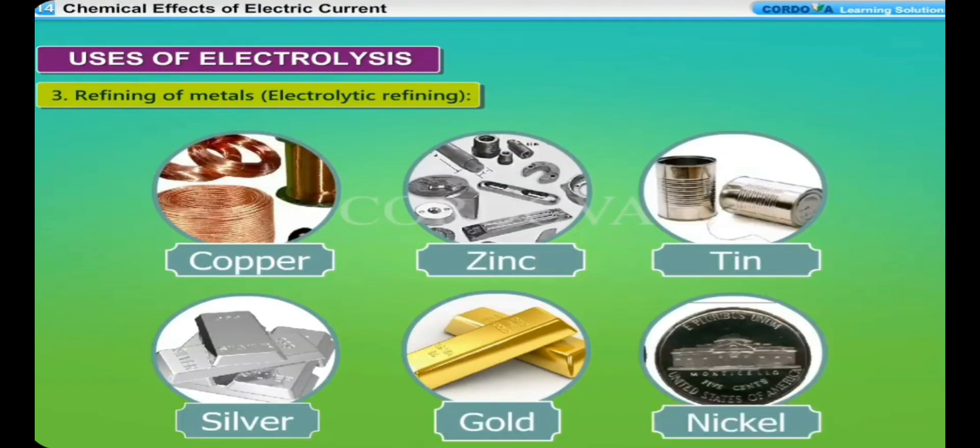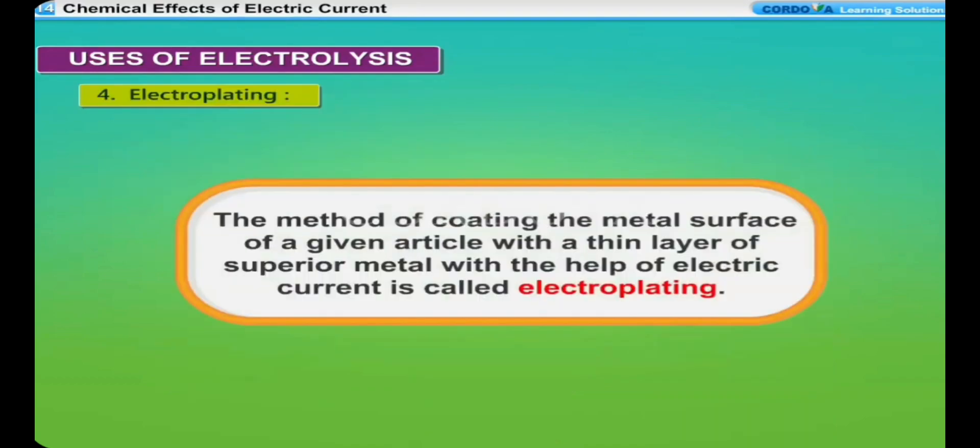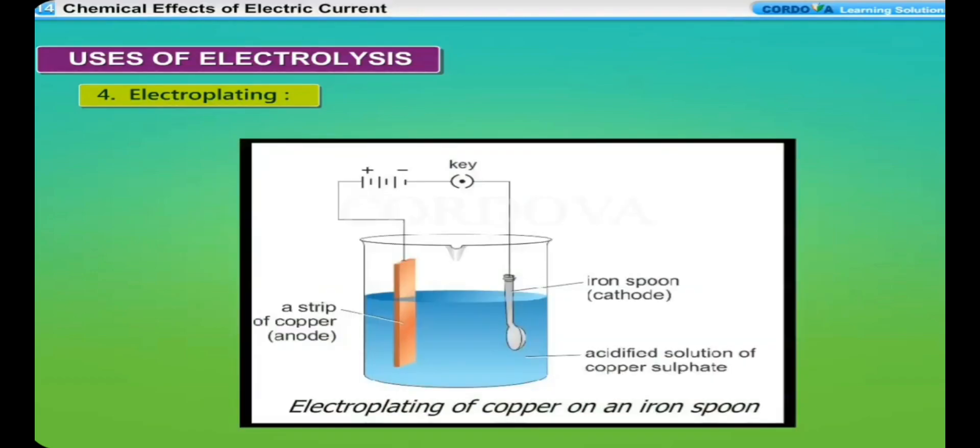Electroplating: The method of coating the metal surface of a given article with a thin layer of superior metal with the help of electric current is called electroplating. When copper sulphate is dissolved in water, it forms positively charged copper ions and negatively charged sulphate ions. When electric current is passed through the acidified copper sulphate solution.